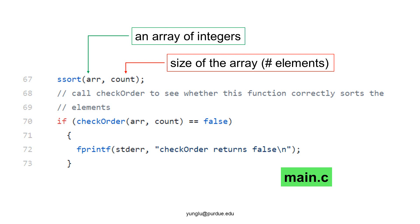The first argument is an array of integers. The second is the size of the array. That is, the number of elements of the array. After the selection sort is called, the array should have been correctly sorted.